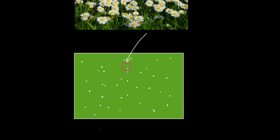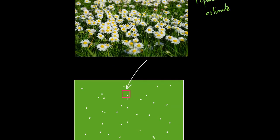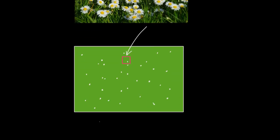You'd place the quadrat down and count how many daisies are within that area. You could then use that to work out an estimate of how many daisies are in the entire area. You're going to do multiple quadrats, which leads to calculating a mean value. This is why it's an estimate — what you come up with won't be the exact count of daisies, it'll be a mean.